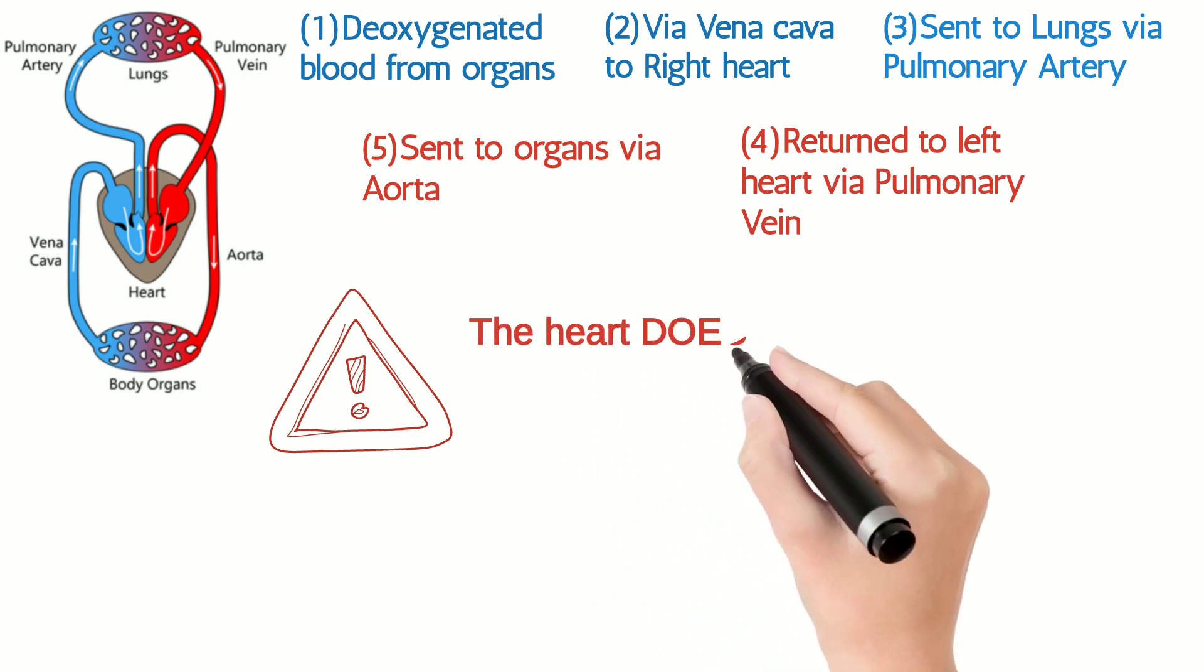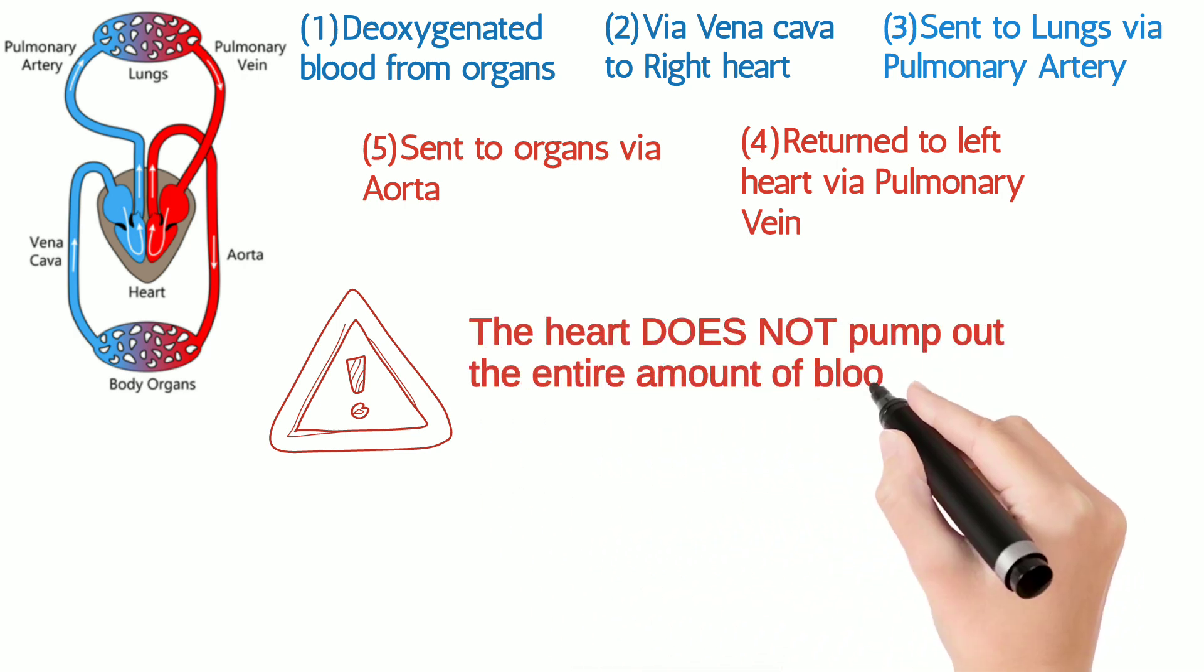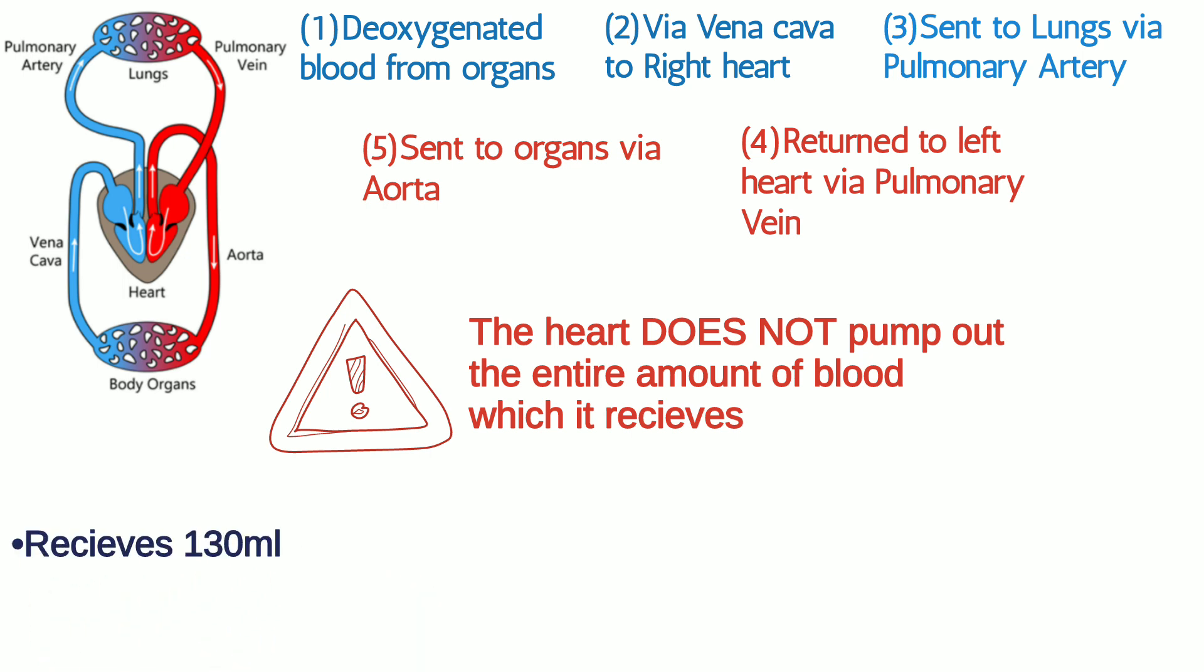An important point to note is that the heart does not pump out all the blood it receives. For instance, it receives around 130 ml of blood in every cycle but sends out only 70 ml. This is around 60% of the received amount, which is termed as ejection fraction.